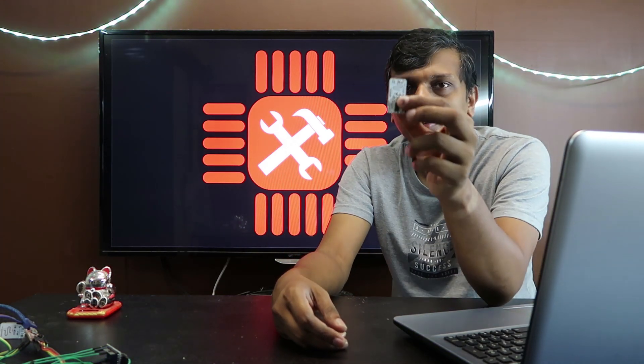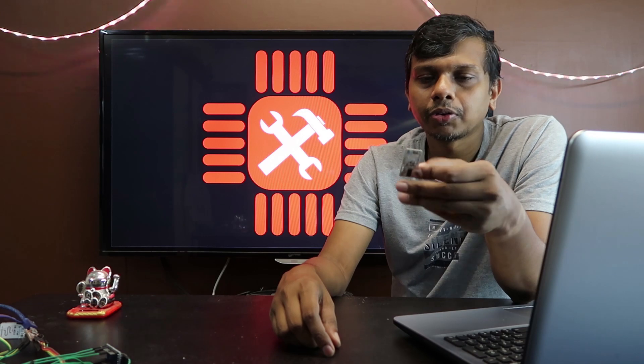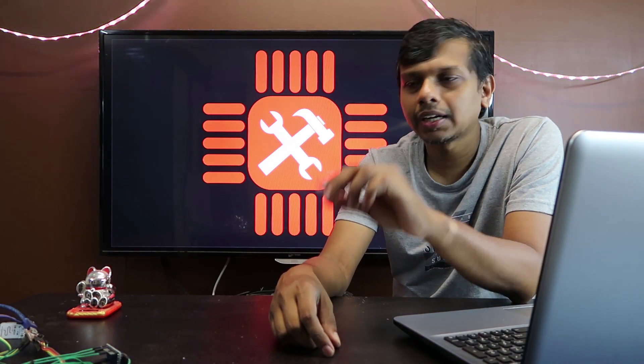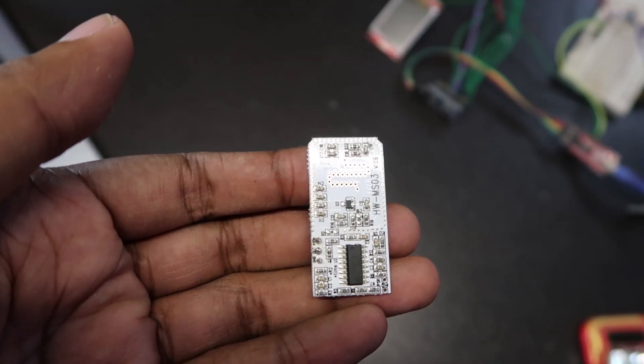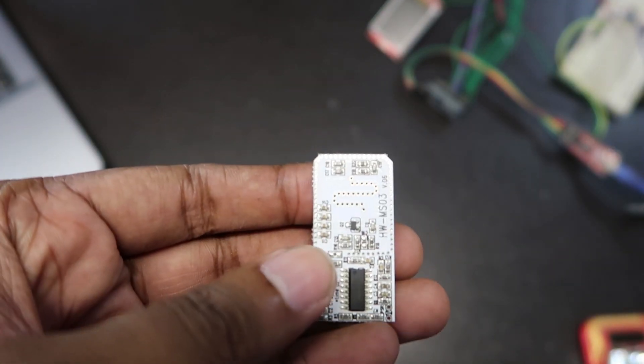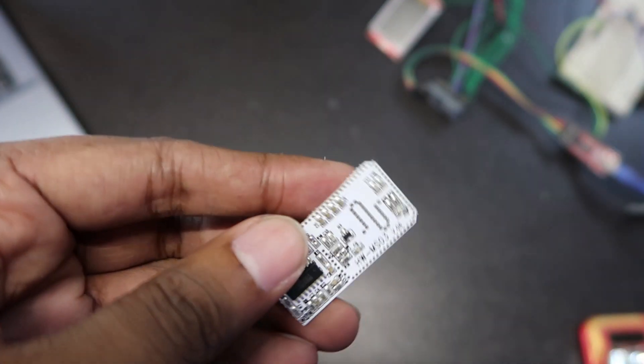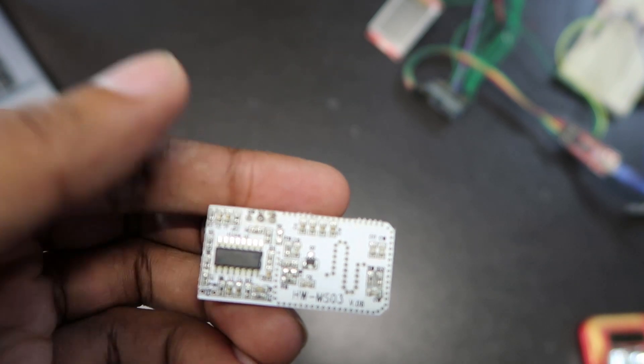We are going to use this device. This is the HWM031 microwave radar module. We will tell you about the microwave and the case. This is our radar module — this is a 2nd generation radar module.